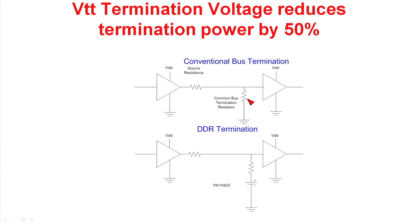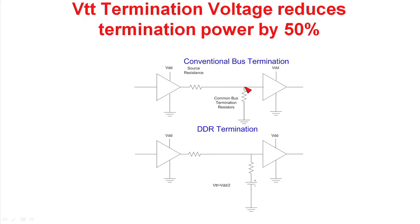So if you're running at half duty factor, your power in your resistors is equal to V squared divided by two — because you're at half duty factor — divided by the two resistors in series.